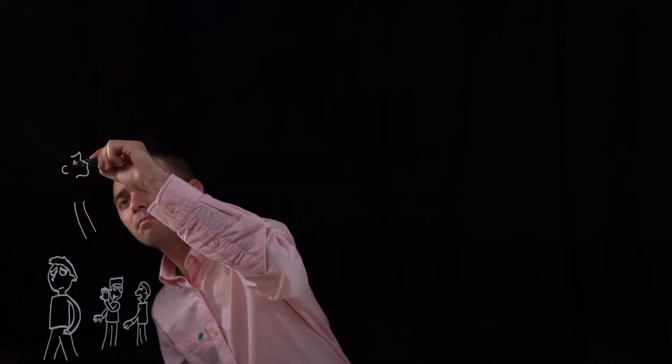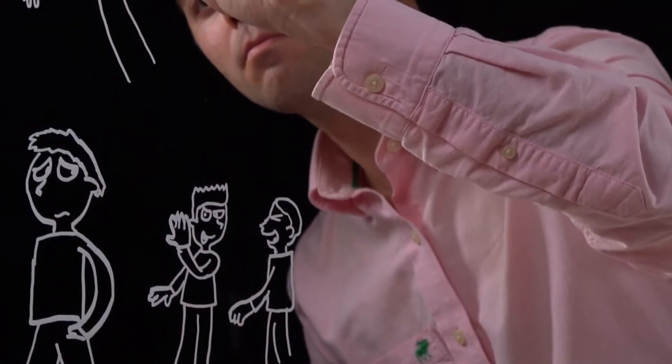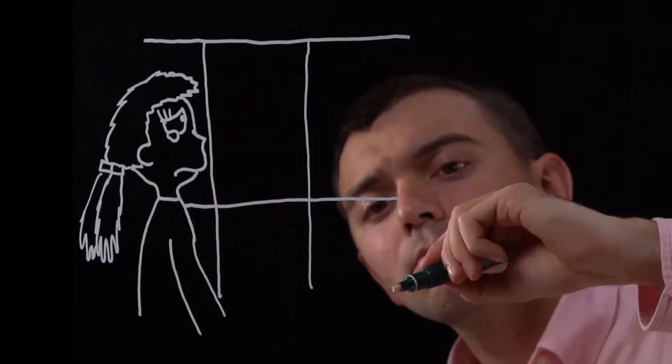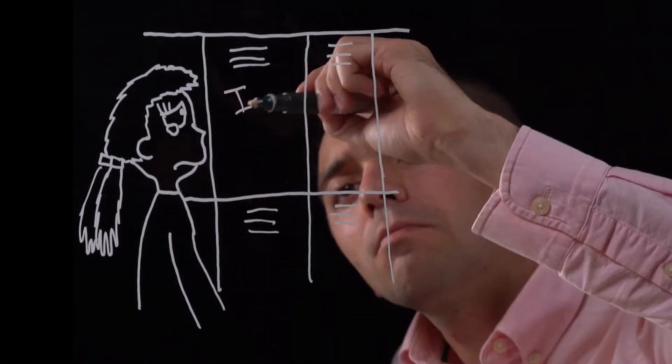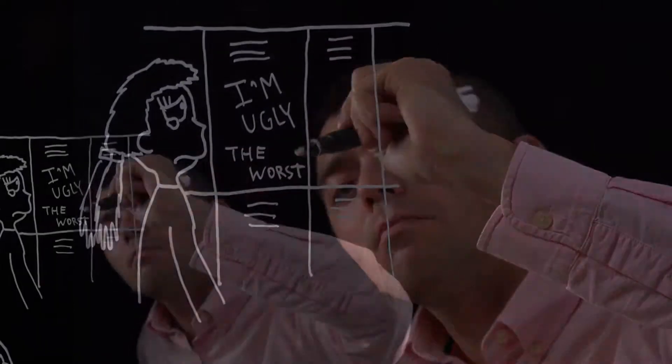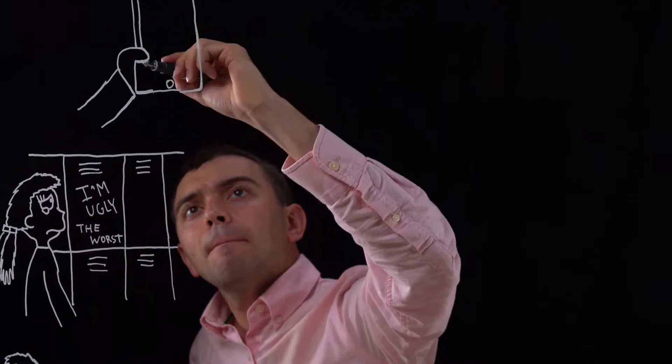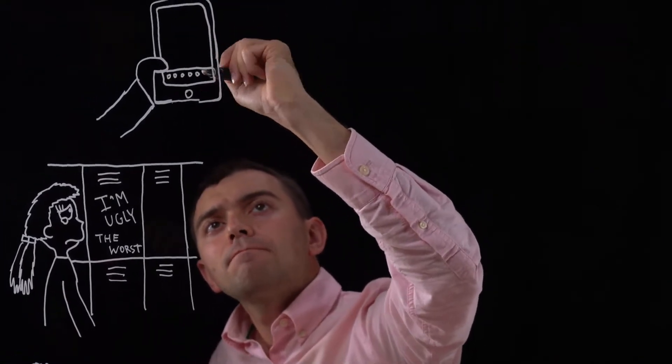Bullying can mean various things like people talking mean things behind one's back. If you're in school and you see your locker graffitied with negative words, and even worse is the online bullying as well.